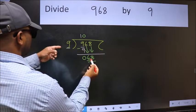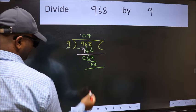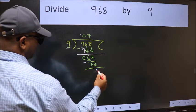A number close to 68 in the 9 table is 9 times 7, 63. Now we should subtract. We get 5.